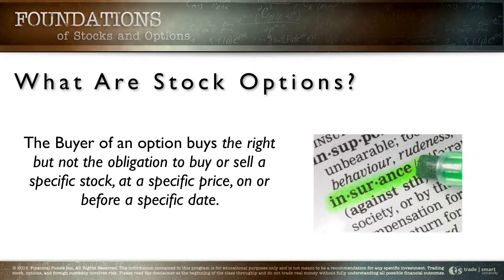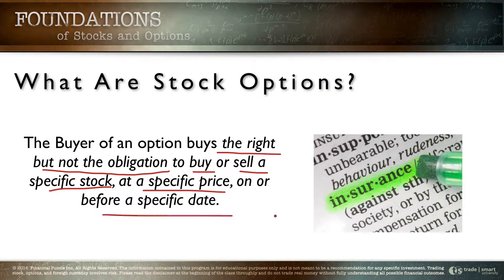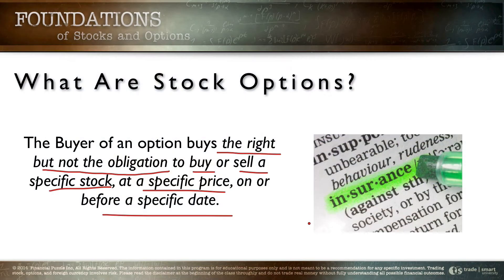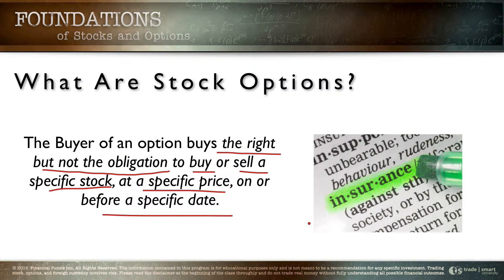What I want to do in this section is start explaining the option instrument better so you can have a better idea of what you're going to be trading when we start trading options. To start the discussion, let's look at the definition of a stock option. The buyer of a stock option purchases the right but not the obligation to buy or sell a specific stock at a specific price on or before a specific date.